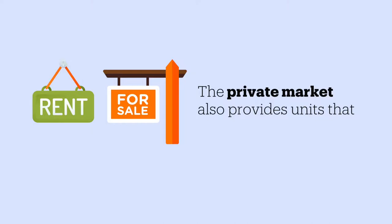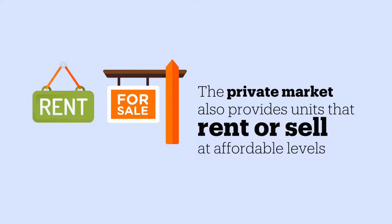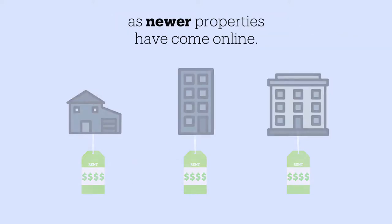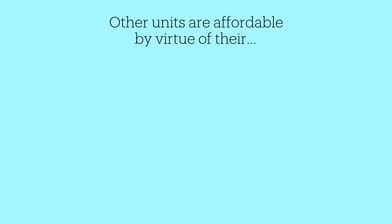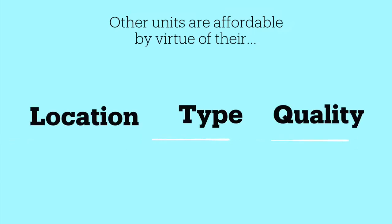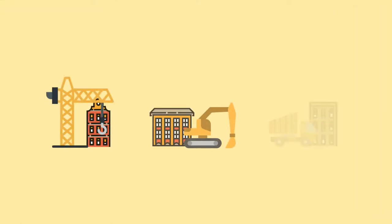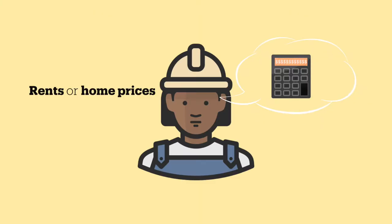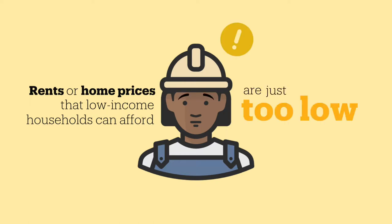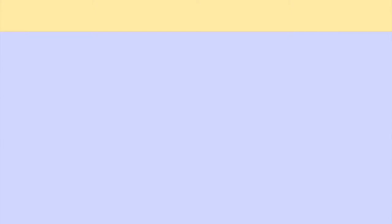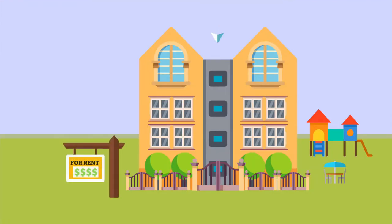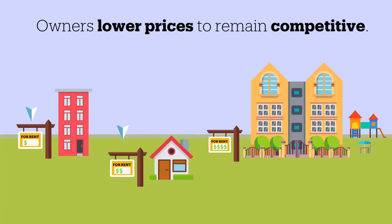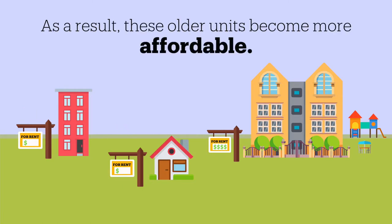The private market also provides units that rent or sell at affordable levels without the use of any explicit subsidies. Often, these are older homes whose rents have become affordable over time as newer properties have come online. Other units are affordable by virtue of their location, type, or quality. In many cases, constructing new housing affordable to low-income households is not financially feasible without government subsidy. The rents or home prices that low-income households can afford are just too low to support the cost of constructing and operating new development. But when developers build new housing for middle- or higher-income households, the owners of older existing units often find that they need to lower their rents or sale prices in order to remain competitive. As a result, these older units become more affordable.